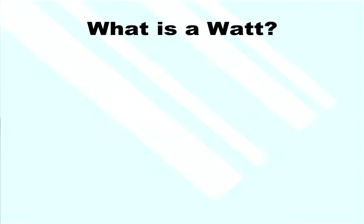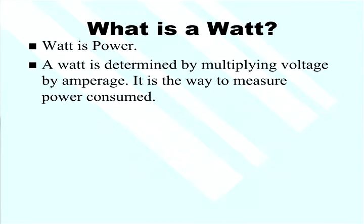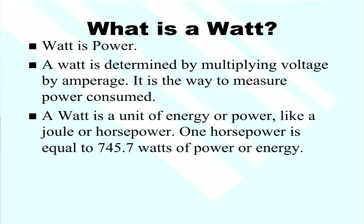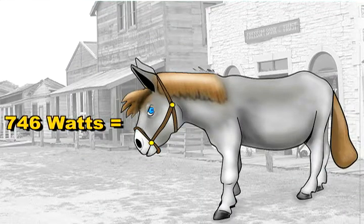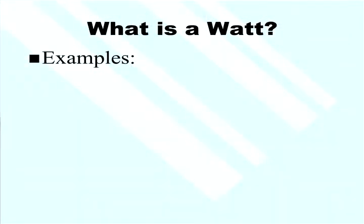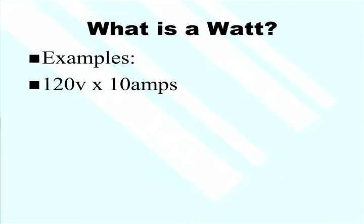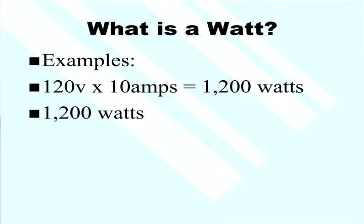Let's talk about wattage. A watt is power. A watt is determined by multiplying voltage by amperage, and it is the way to measure power consumed. A watt is a unit of energy or power, like a joule or horsepower — one horsepower is equal to 746 watts. For example: 120 volts times 10 amps equals 1,200 watts. You can invert that equation: if watts is known at 1,200 and voltage is known at 120 volts, you divide and get 10 amps.